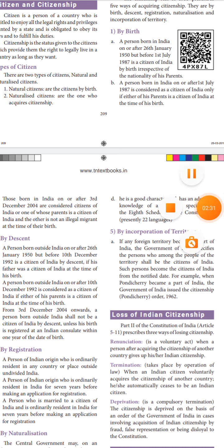The third one is deprivation, which is a compulsory termination on the basis of an order of the Government of India. This applies in cases of acquiring Indian citizenship by fraud or false representation, or being disloyal to the constitution. So when fraud, false representation, or disloyalty to the constitution is involved, the government orders the cancellation of that citizenship.